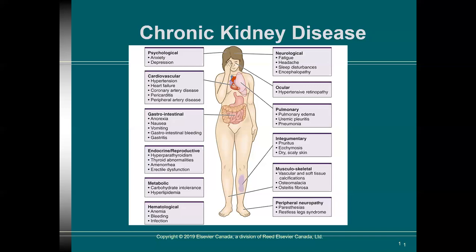From a gastrointestinal perspective, we see basic symptoms of anorexia, nausea, vomiting, sometimes GI bleeding, and gastritis — an inflammatory process in the GI system — which can be a hallmark early sign and very distressing because patients have a difficult time eating. Cardiovascular symptoms include hypertension, heart failure, an elevation in coronary artery disease, pericarditis — inflammation around the heart — and widespread peripheral artery disease. And finally, from a psychological perspective, and certainly not a surprise, high levels of anxiety and depression.